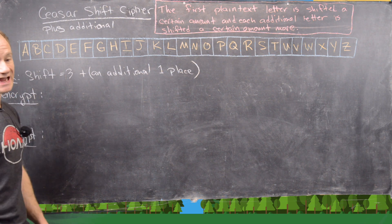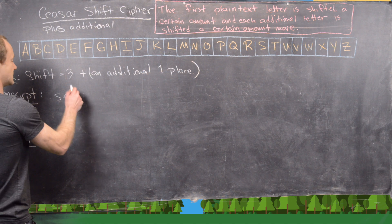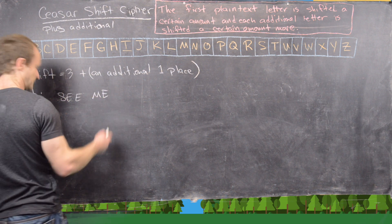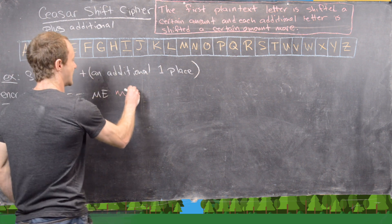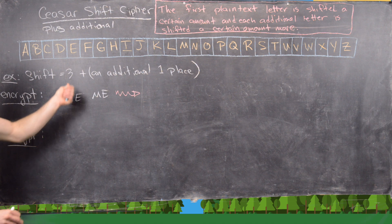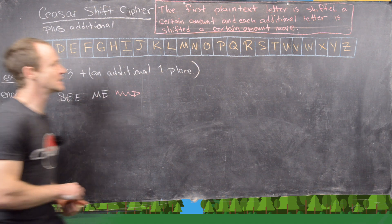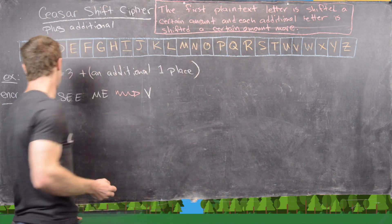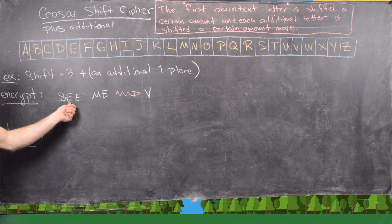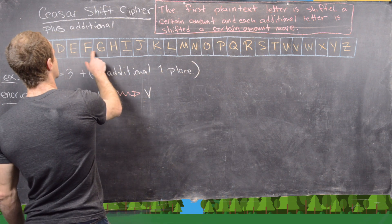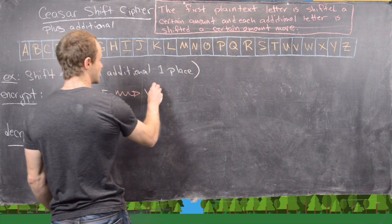Let's encrypt the message 'see me'. Our first letter S is shifted 3 units, going to V. Our second letter E is shifted 4 units — one additional — going to I.